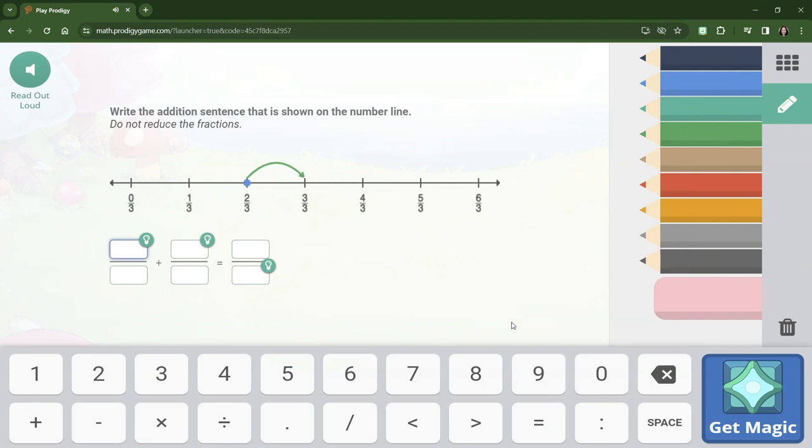Now we're doing fractions on a number line. So first thing to notice is all of these denominators are 3. So here, we're going to put 3 for all of these. Where the dot is, is where we start. And because the arrow is going this way, that means we're adding. And we're adding one jump at a time.